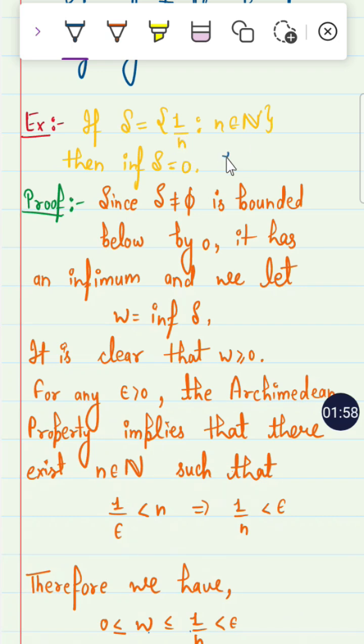What is the set? This set is 1, 1 by 2, 1 by 3 and so on. When you take the limit of this, this is 0. So 0 is the infimum of this set and the supremum is 1.